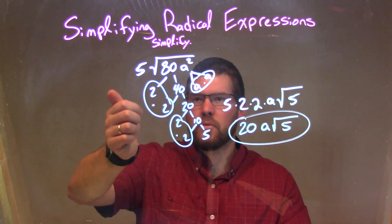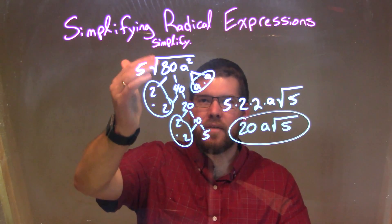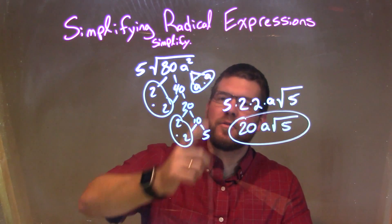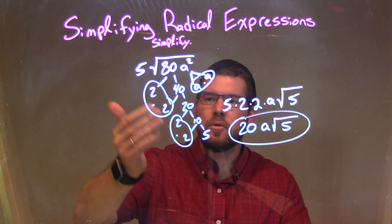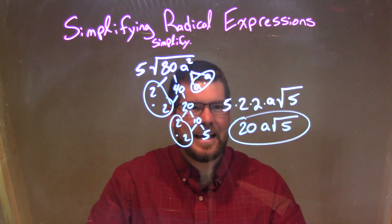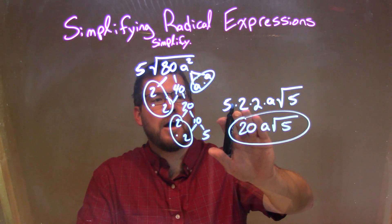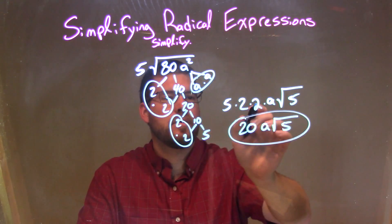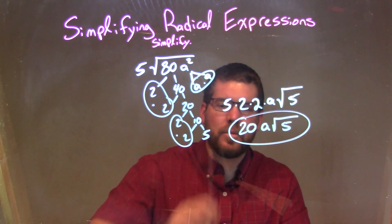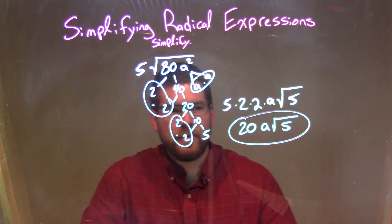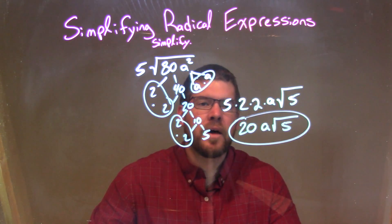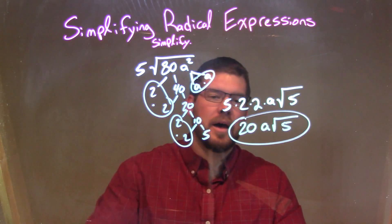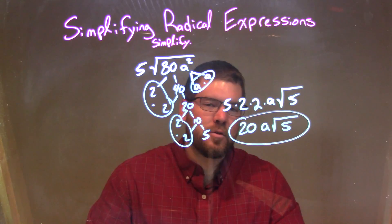So let's recap. We have 5 times the square root of 80a squared. Prime factorization of 80 came out to be 2 times 2 times 2 times 2 times 5, and a squared to be a times a. I circled my pairs — I had two pairs of 2s and one pair of a's. Each pair represented a single element on the outside of the square root, so we have the 2, and then the 2, and then just the a. And the 5 remaining inside the square root gives us the square root of 5. Simplifying: 5 times 2 times 2 is 20. So my final answer is 20a times the square root of 5.